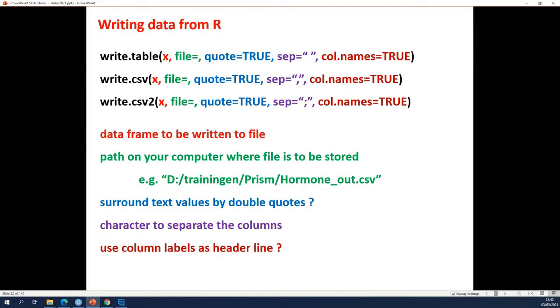How do they differ? Well, again by the default setting of the column separator. So write.table will use a space as a column separator, write.csv will use a comma, and write.csv2 will use a semicolon as a column separator in the file that you generate.